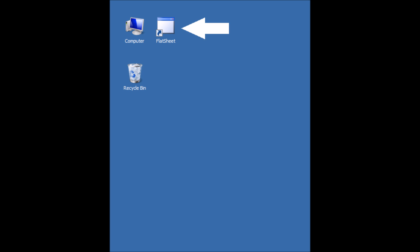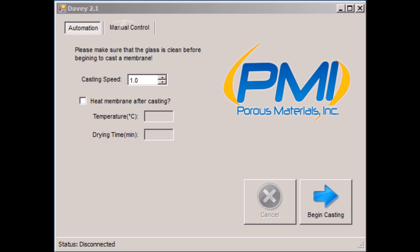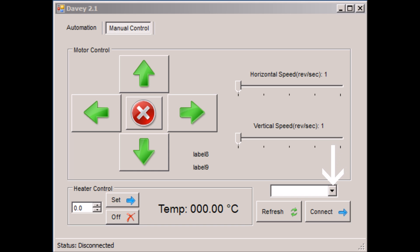Click on the flat sheet icon to open the software. Then navigate to the manual control panel using the tab at the top. Manual control allows you to select your COM port, connect to the machine, change the vertical speed of the doctor's blade, change the horizontal speed of the membrane plate, and change the direction.